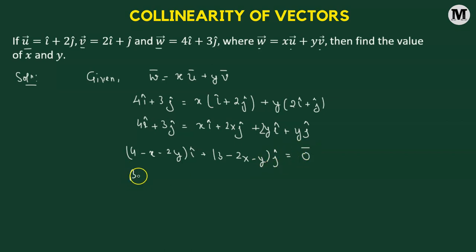But we know that i cap and j cap, these are the unit vectors along x axis and the y axis. They are going to be non-collinear because they're orthogonal to each other.